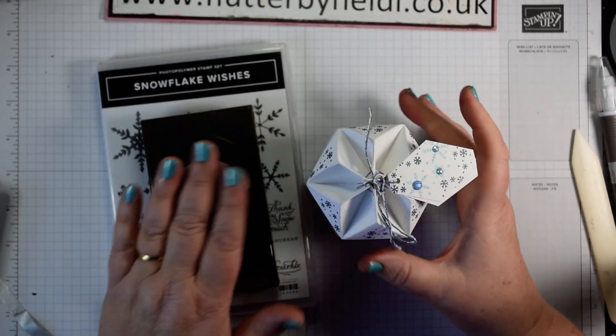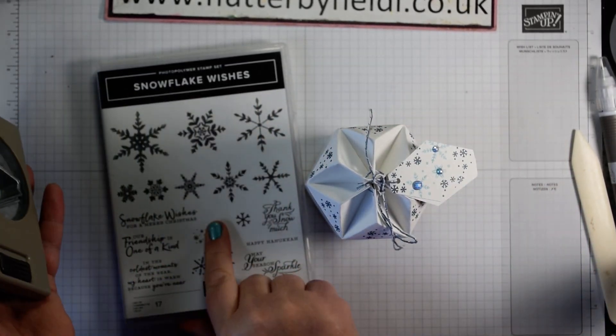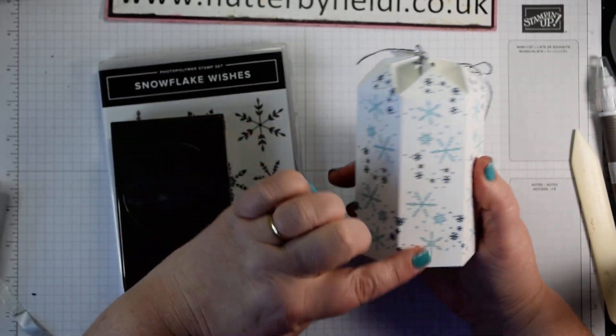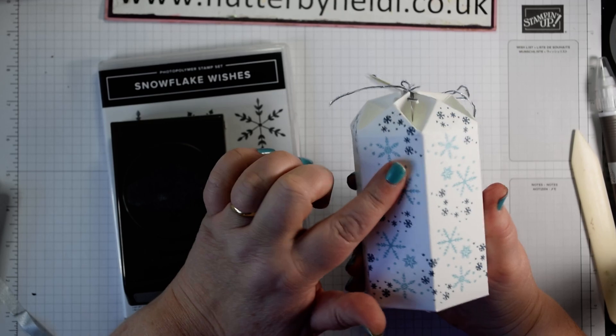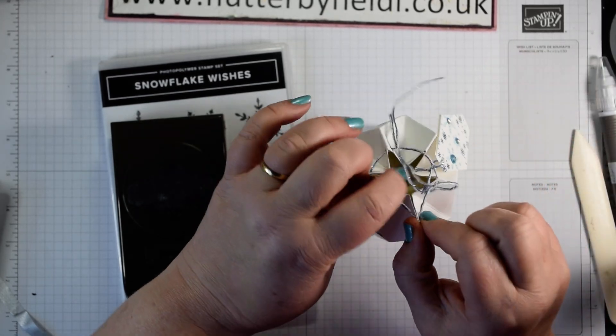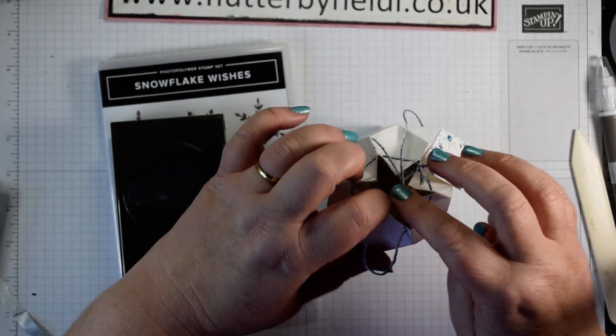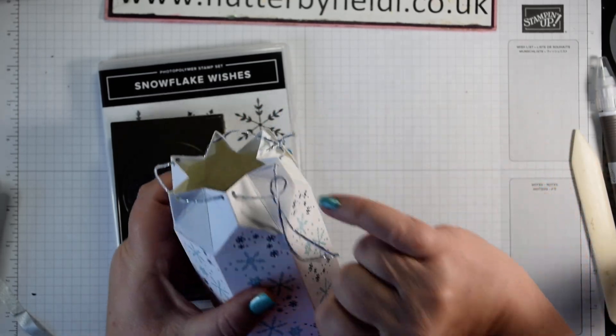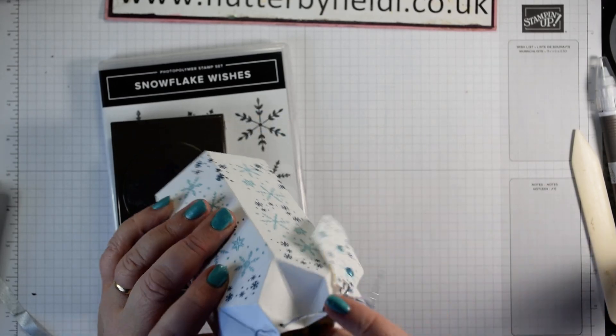You can see I've used the lovely snowflake wishes here, beautiful snowflake designs I've used several times. You can see on the side here a bit of misty moonlight and balmy blue. And I've used some of the lovely flowers for every season ribbon combo for the finish. It is misty moonlight with whisper white and some silver.